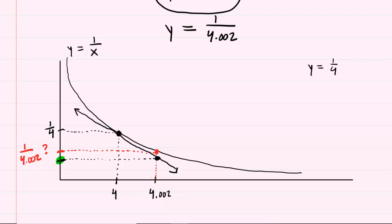So again, the idea is to plug 4.002 not into the original equation, but into the tangent line equation. And we want the tangent line at this point right here.